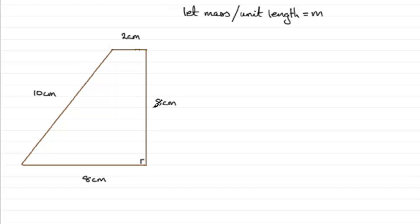So if it's a uniform wire, then the mass for, say, this 10 centimeter stretch will be 10M, and it will be located at the midpoint of this bit of wire. Similarly, 2 centimeters is going to have a mass here in the middle, 2M. We'll put that up there.